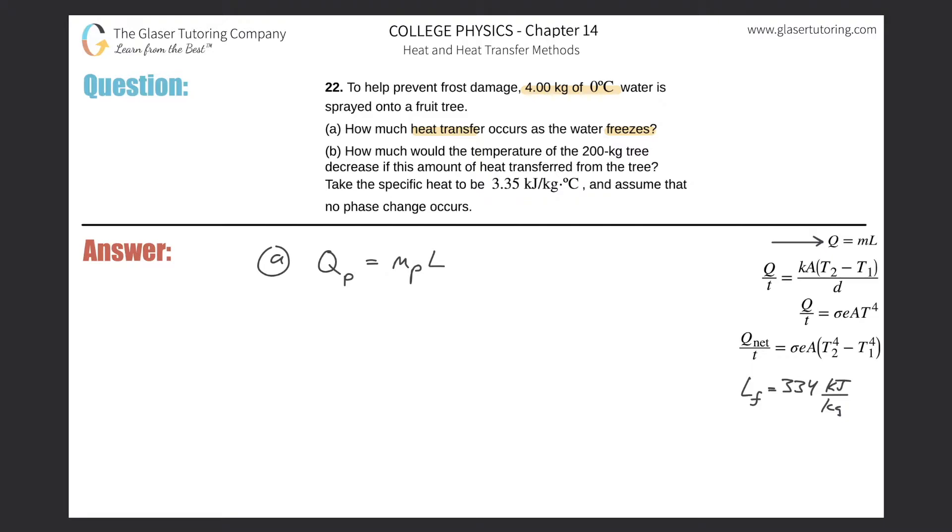depending upon what type of phase change you're talking about. So specifically here we're talking about freezing, so the heat energy upon freezing will be equal to the mass of the liquid that froze, multiplied then by the heat of fusion. So all I now simply need